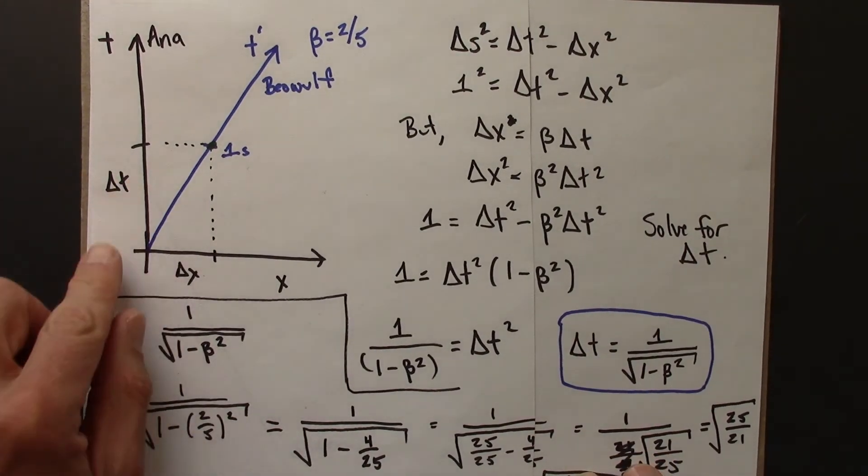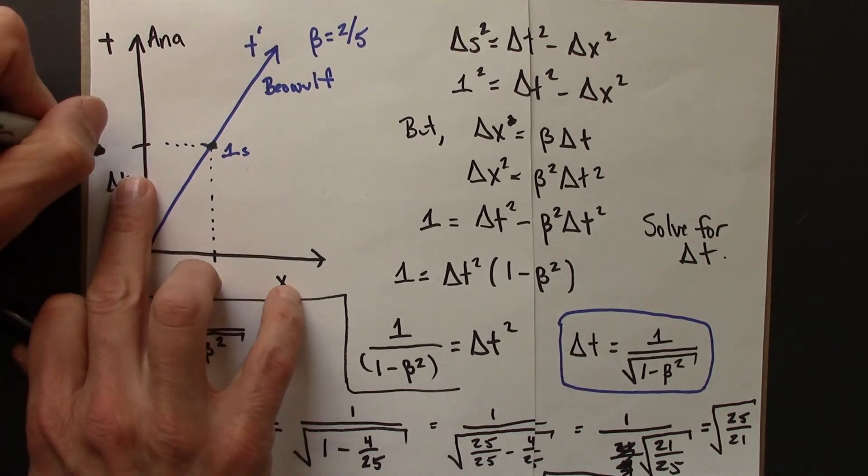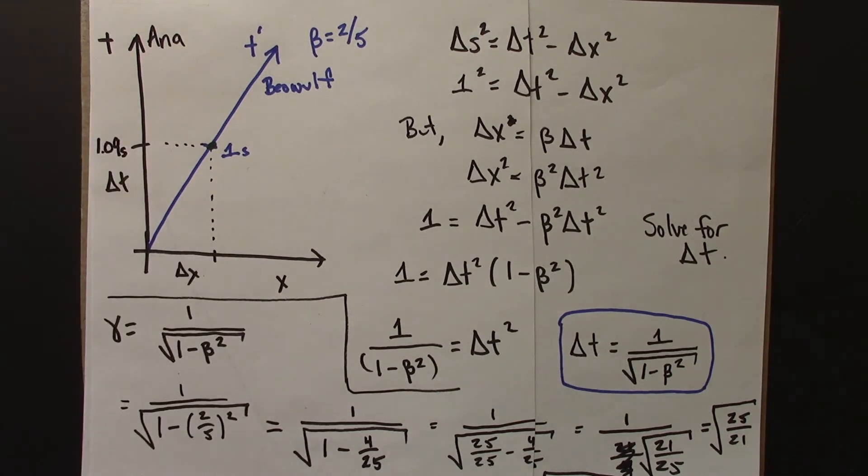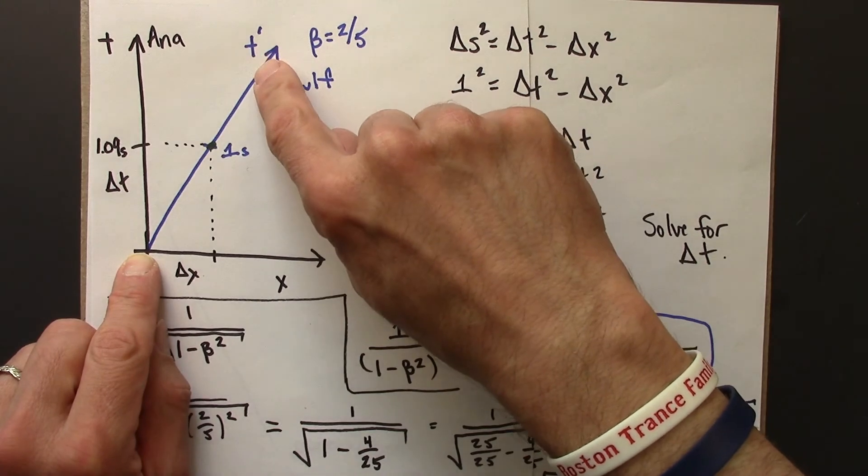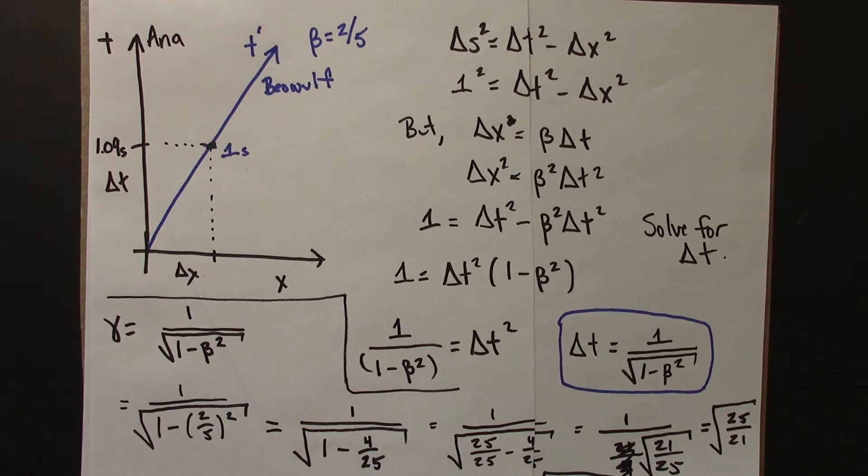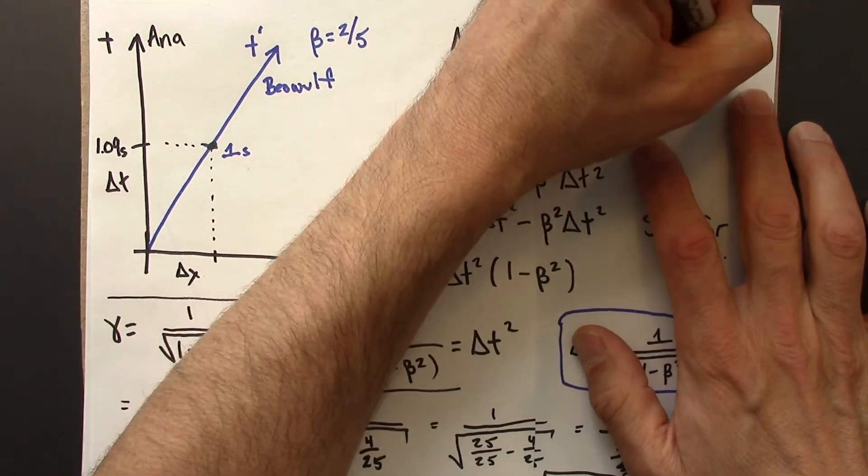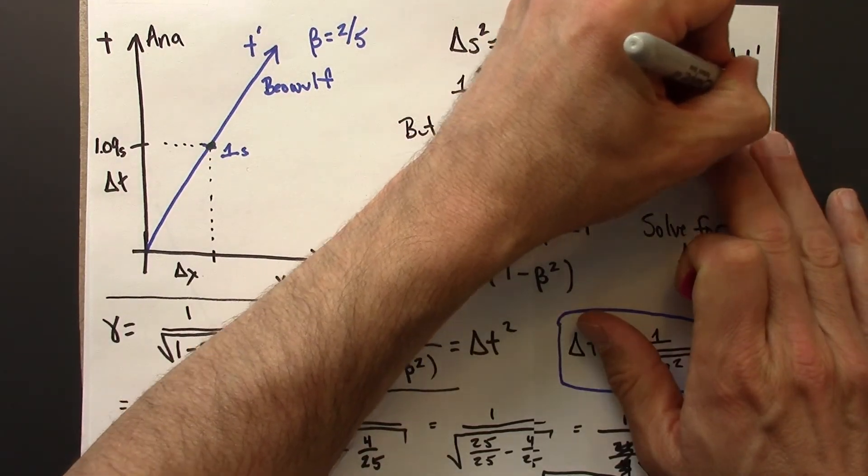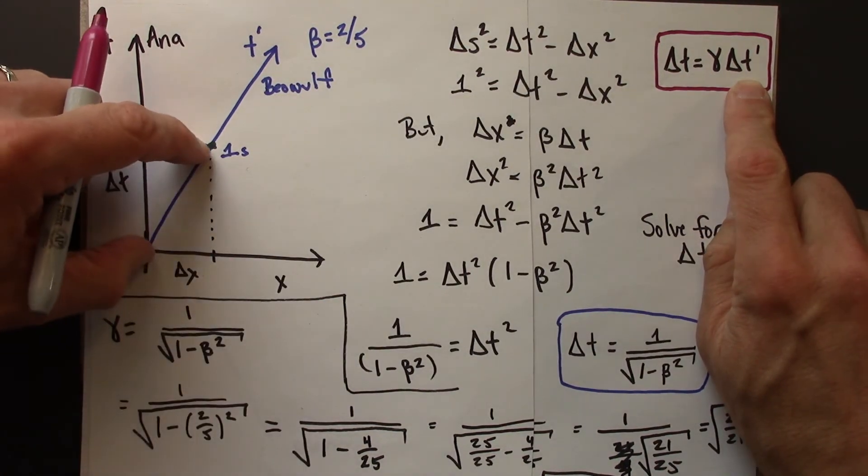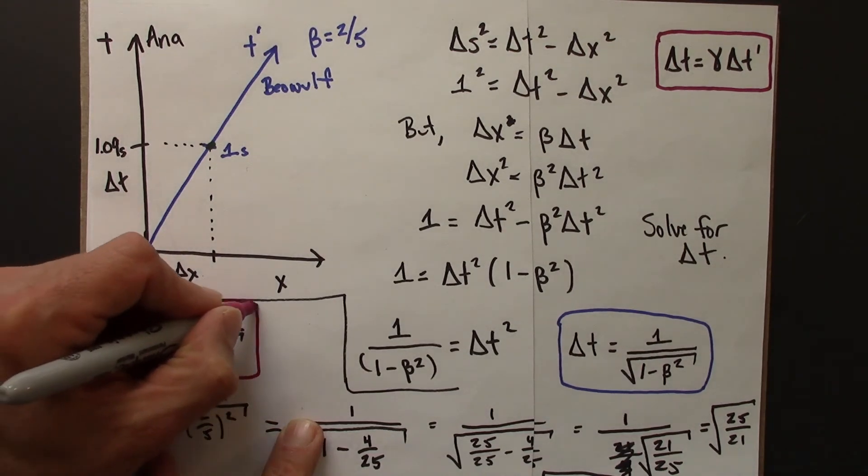So let me conclude by summarizing and just stating this result a little bit more generally. So first, what this 1.09 means is that the time coordinate in Anna's frame for 1 second in Beowulf's frame is 1.09 seconds. And so I did this using a delta t prime of 1 second. But this would hold for any time interval along this axis. And so the general result is that delta t equals gamma delta t prime. So again, we had a delta t prime of 1, we could do it with 2, we could do it with 3, and it's always the same factor of gamma, where gamma is given by this.